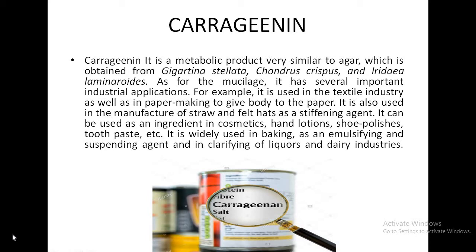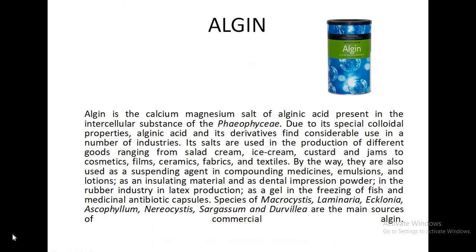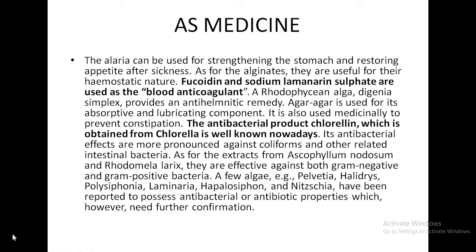In recent years, carrageenan has supplanted agar in the food and pharmaceutical industry. It is also utilized in the textile, leather, and dyeing industry. Alginates are the salts of alginic acid, which occur in the cell walls of brown algae of the order Laminariales — including Laminaria, Ascophyllum, Fucus, Macrocystis, and Ecklonia. The seaweeds are treated with acid, then calcium, potassium, and magnesium salts are added to obtain alginates. Alginates are non-toxic, viscous, and readily form gels, making them useful as thickeners, emulsifiers, and gelling agents.